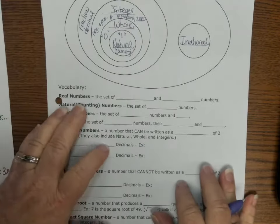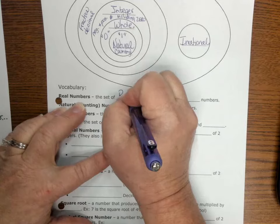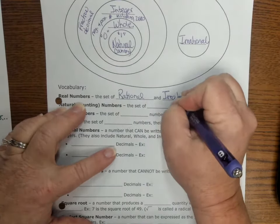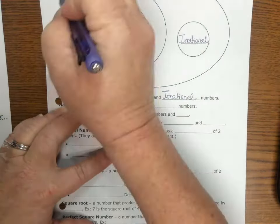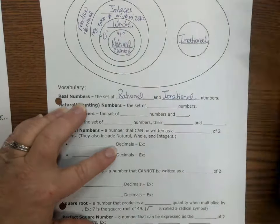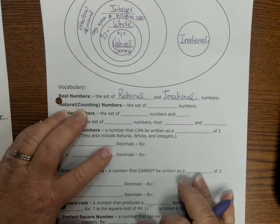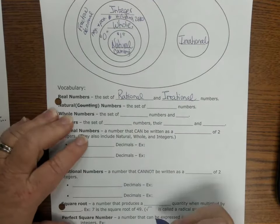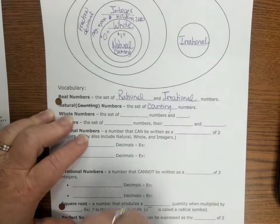So here we go. Let's fill in our notes. Real numbers, real numbers, the set of all of rational and irrational numbers. So the real number system includes rational and irrational numbers. We start with natural or counting numbers, which we shouldn't have put that there because natural numbers is the set of counting numbers. That's what we wanted to write in here.